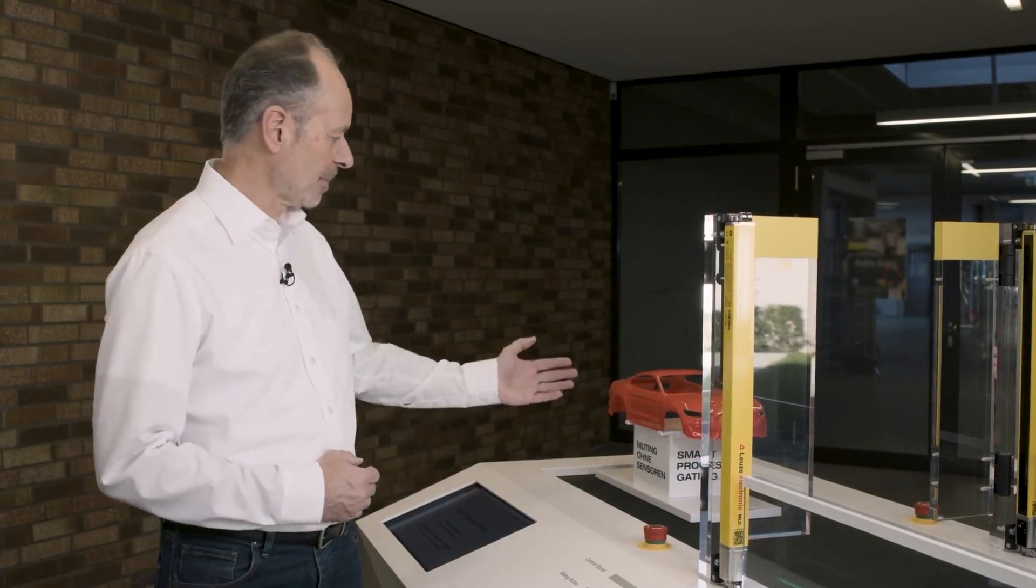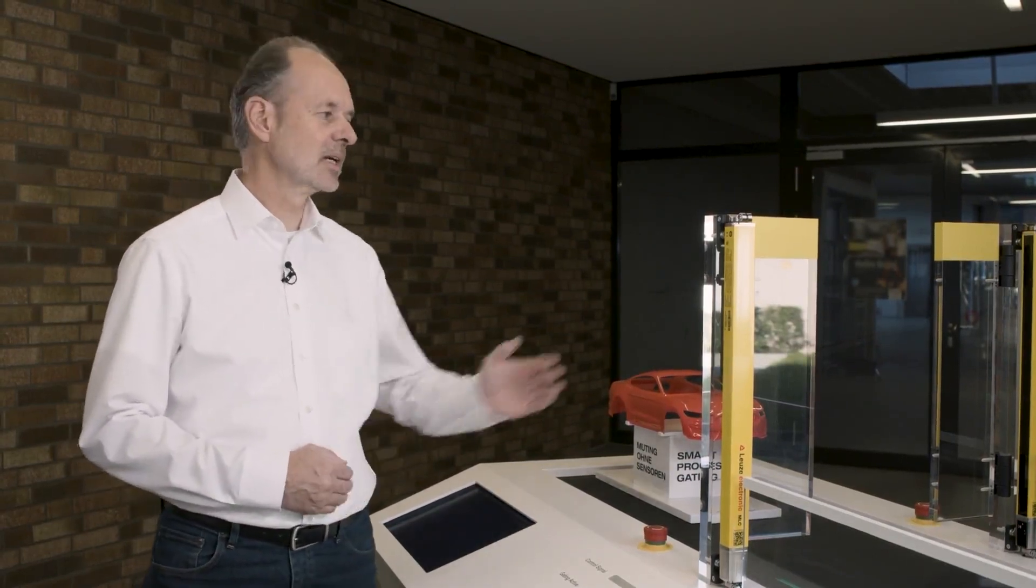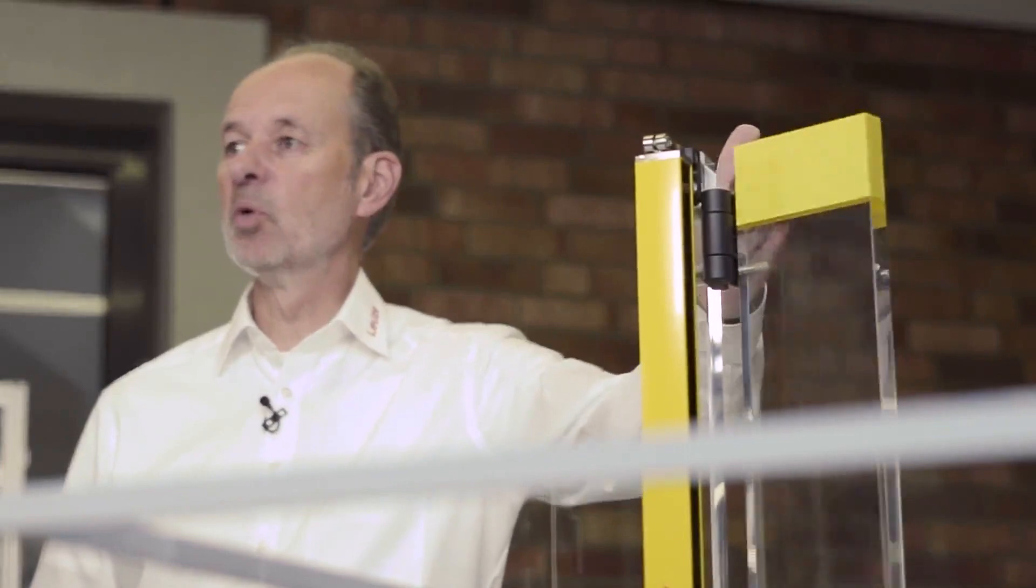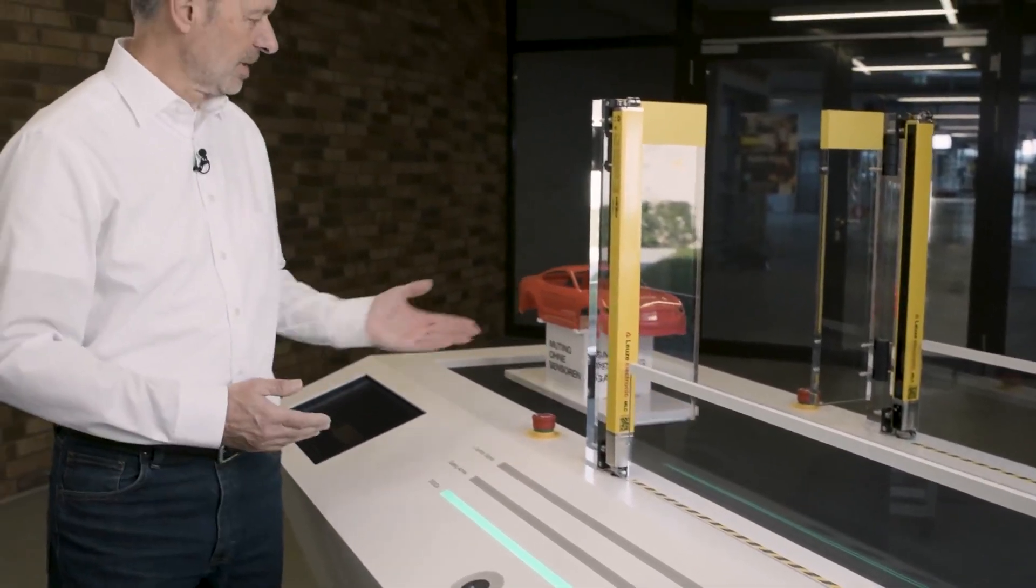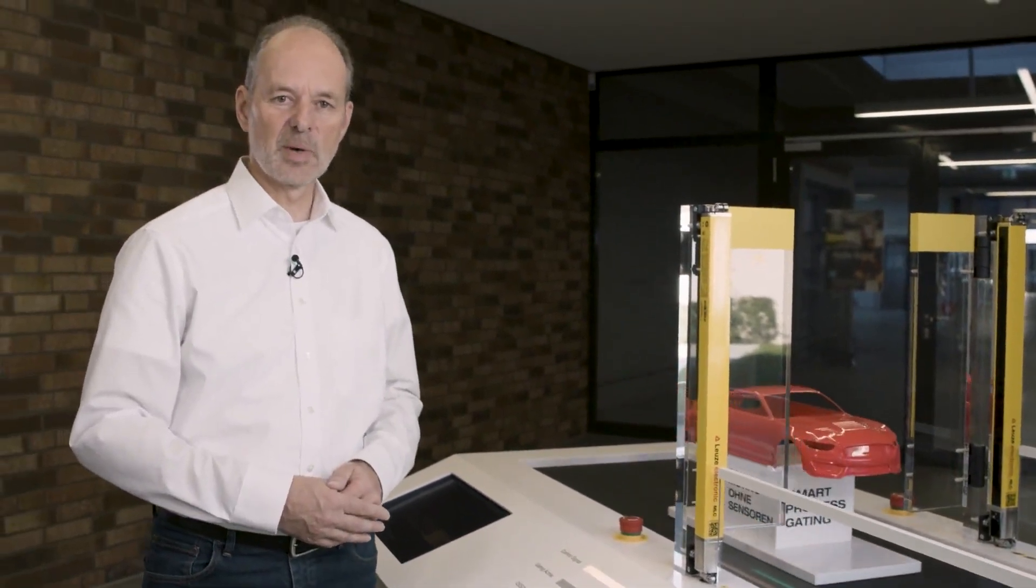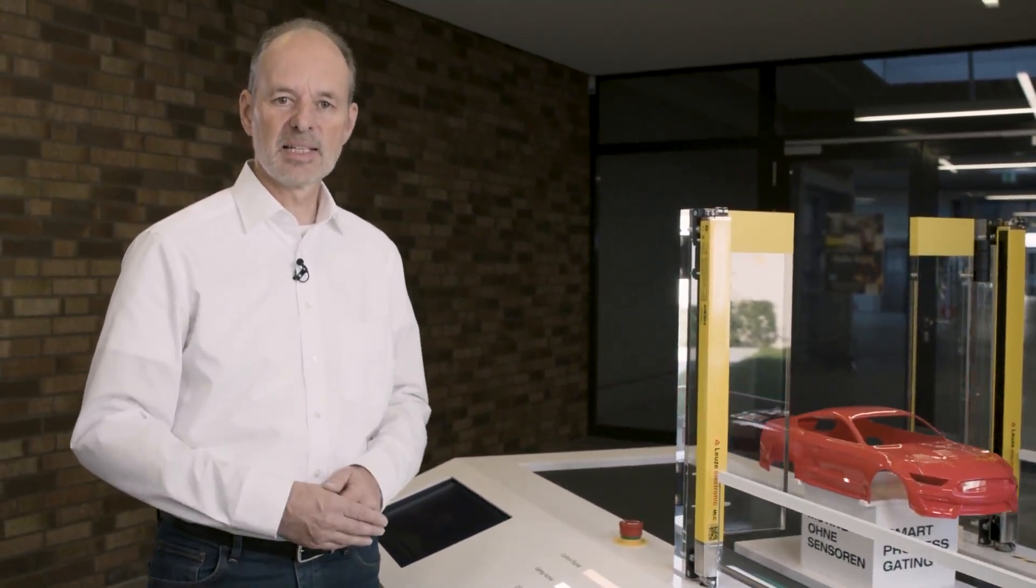We will also look at this on the model. We see here as an example where the car body and the swing flaps that are mounted on the model. I'm starting the process now. You can see here the car body can pass the safety sensors with smart process gating active.